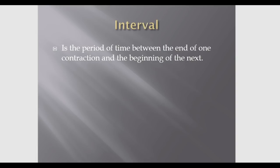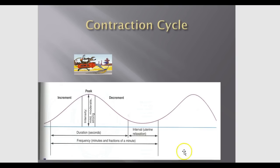The interval is the period of time between the end of one contraction and the beginning of the next. On the contraction cycle diagram, you can see the increment where the contraction builds, the peak (acme) which is the most intense portion, and the decrement as the uterus begins to relax. Frequency is beginning of one contraction to beginning of the next; duration is beginning to end of the same contraction; the interval is the resting phase between contractions.